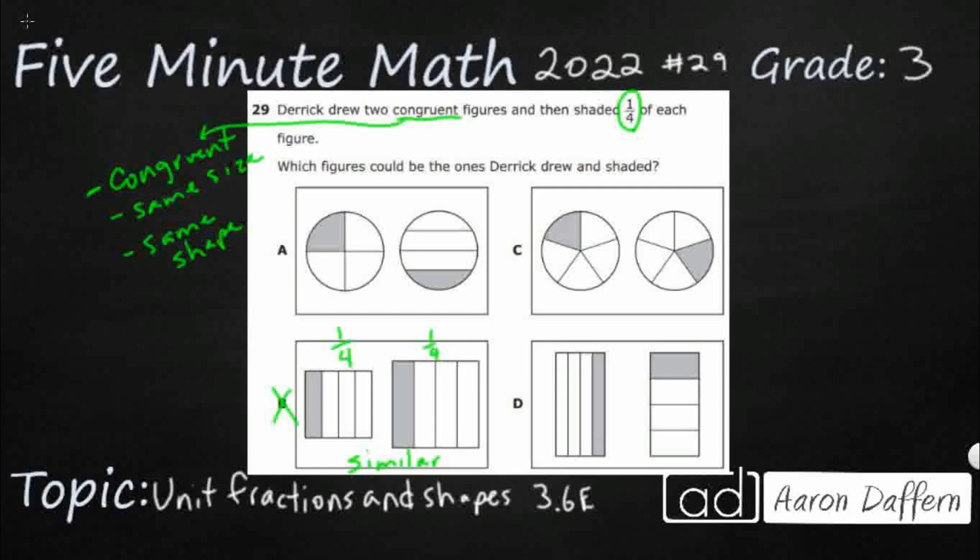So A, C, and D are at least congruent, because they're the same shape for each of them. A and C are circles. D looks like some rectangles. Alright, so now we need to get into the fractional part of it.